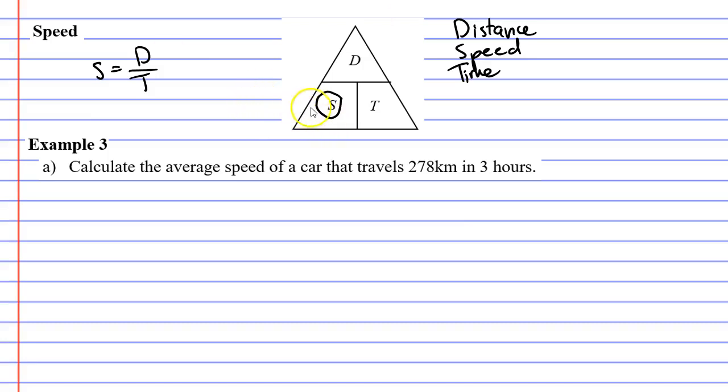What if I wanted to find time? Notice if I'm trying to find time, that distance this time is above speed. So the formula for time is distance over speed.